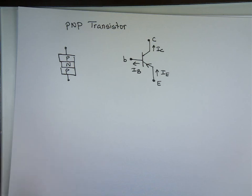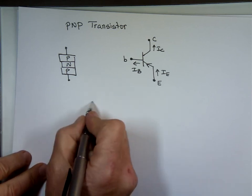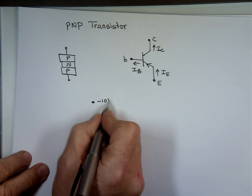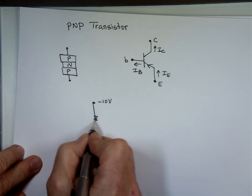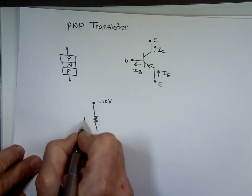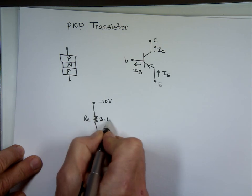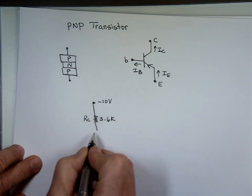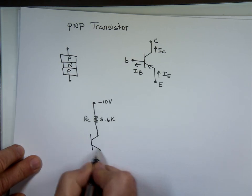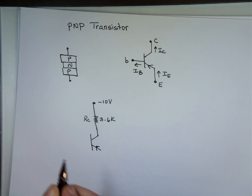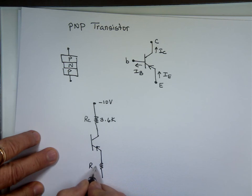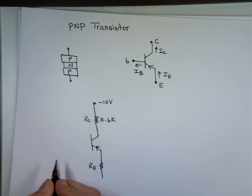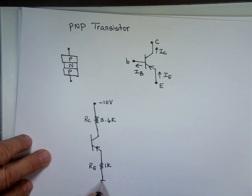Let's take a circuit, analyze it, and see what will happen. The circuit has a resistor R_C equal to 3.6K, a PNP transistor, and R_E which is 1K. And this is the ground.